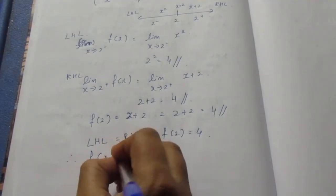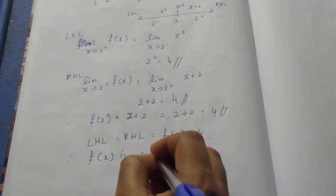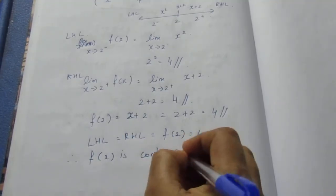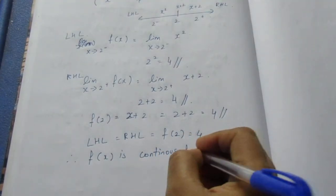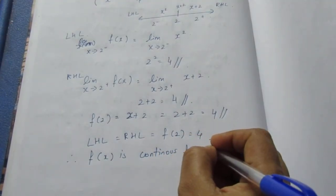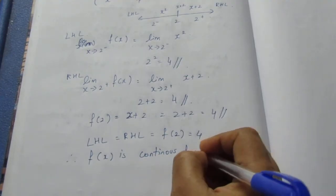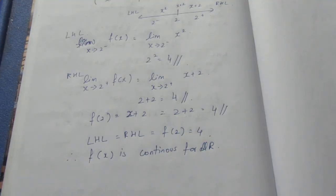Therefore, f(x) is continuous for all real values. For all real numbers r, the function is continuous. That's the sum.